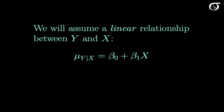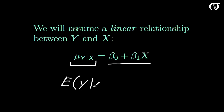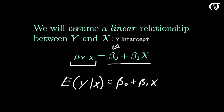We are going to assume a linear relationship between Y and X. Now this isn't always the case, but it's a simple and important relationship. We assume that the true mean of Y for a given value of X is equal to this line — written as E(Y | X) = β₀ + β₁X. We're assuming this is the true relationship, with β₀ being the Y-intercept and β₁ being the slope.